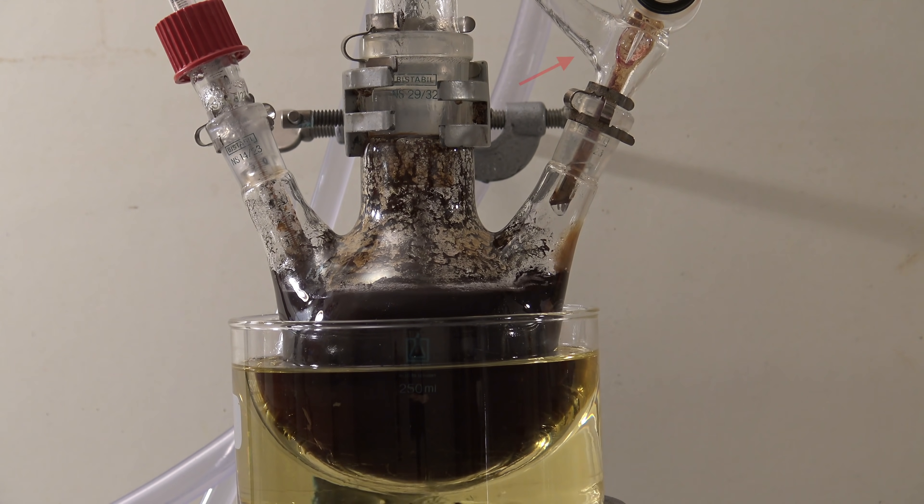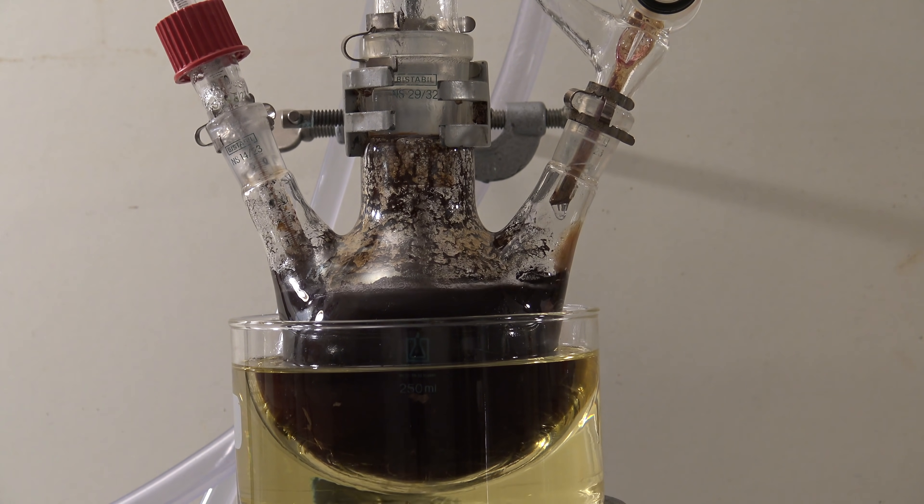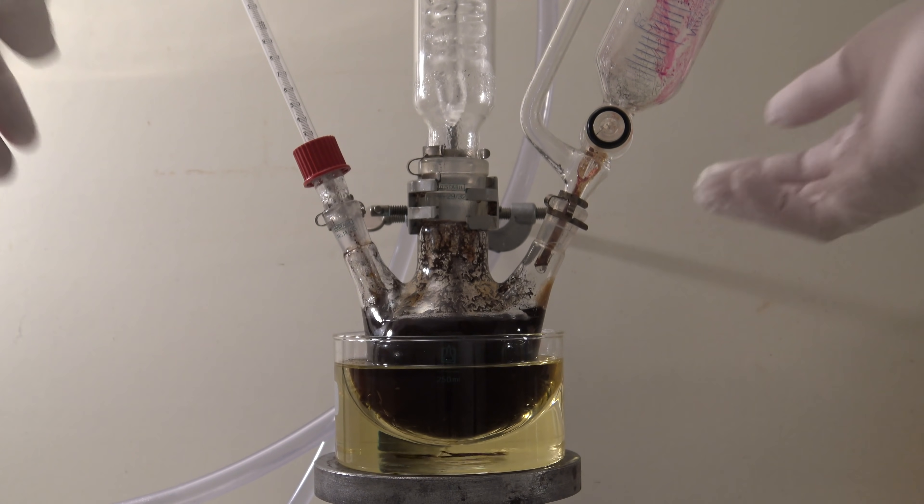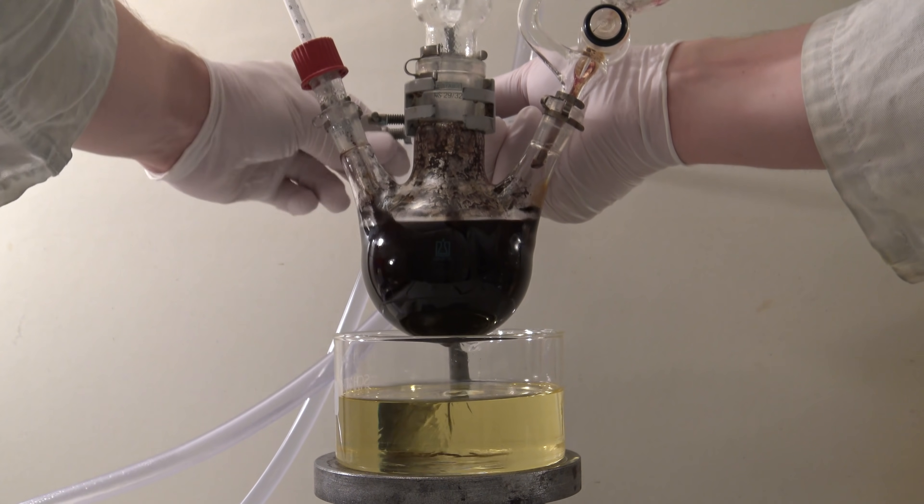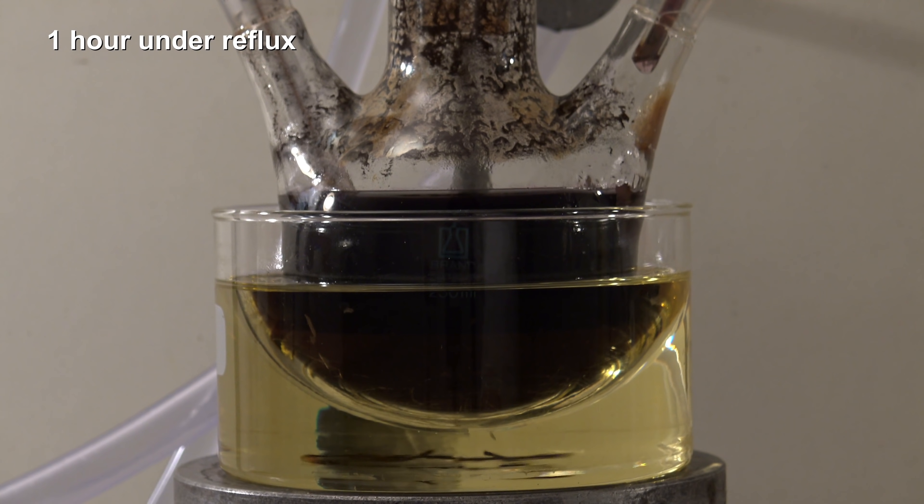After 1.5 hours, it could be seen that the condensate did contain significant amounts of toluene. To check if permanganate was still present, the flask was removed from the oil bath. The manganese dioxide settled at the bottom and it could be seen that permanganate was still present.